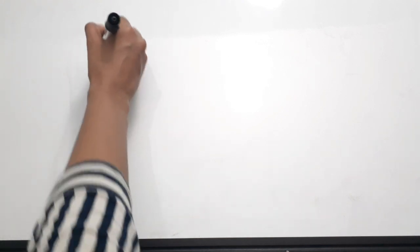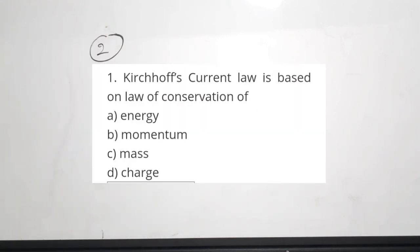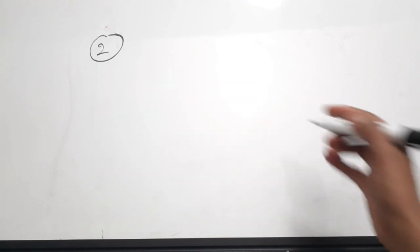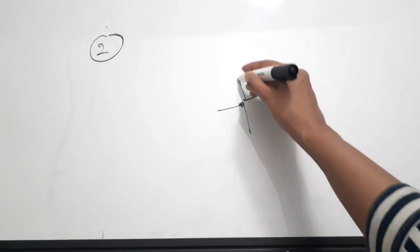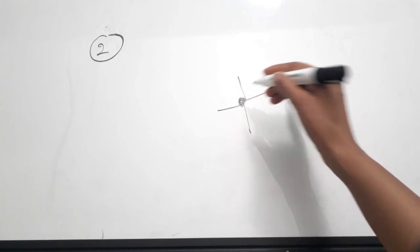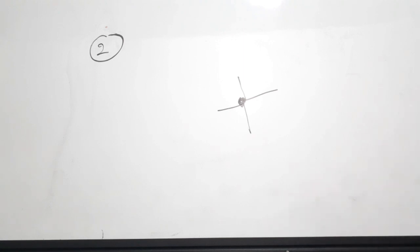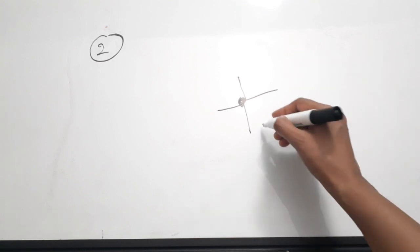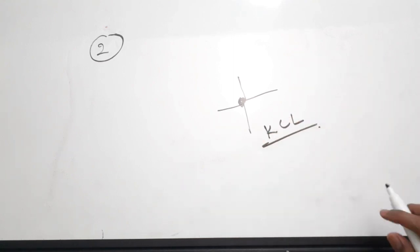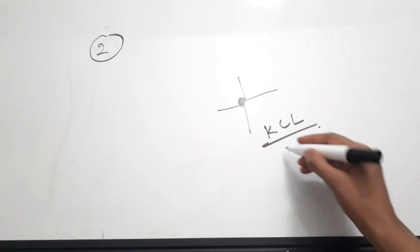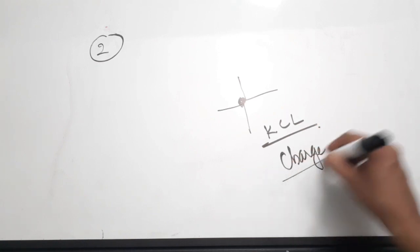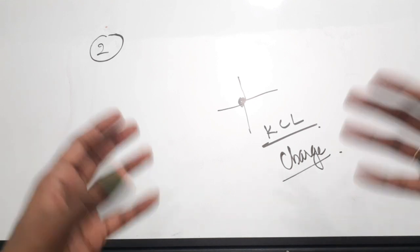Second question is from Kirchhoff's laws. Kirchhoff's current law is based on the law of conservation of — A: energy, B: momentum, C: mass, D: charge. KCL states that the algebraic sum of currents coming to a node is equal to zero. Current is nothing but the flow of charge, so when we apply KCL we are actually applying the law of conservation of charge.